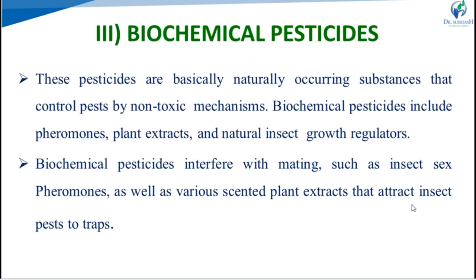Third category, biochemical pesticides. These pesticides are basically naturally occurring substances that control pests by non-toxic mechanisms. Biochemical pesticides include pheromones, plant extracts and natural insect growth regulators. They interfere with mating such as insect sex pheromones, as well as various scented plant extracts that attract insect pests to traps.